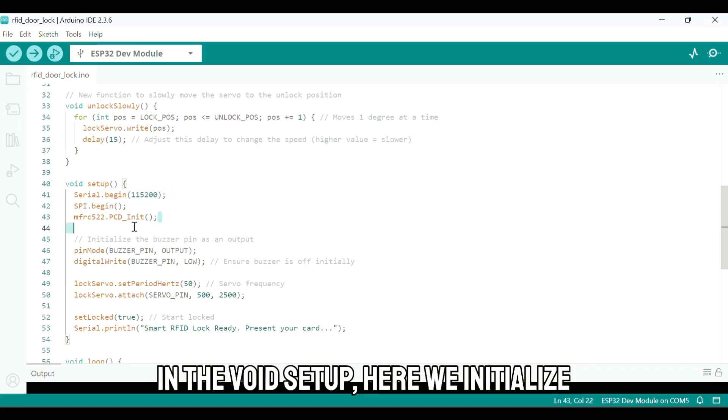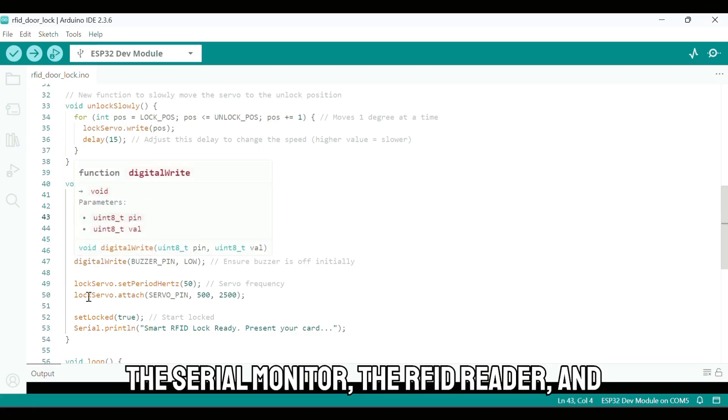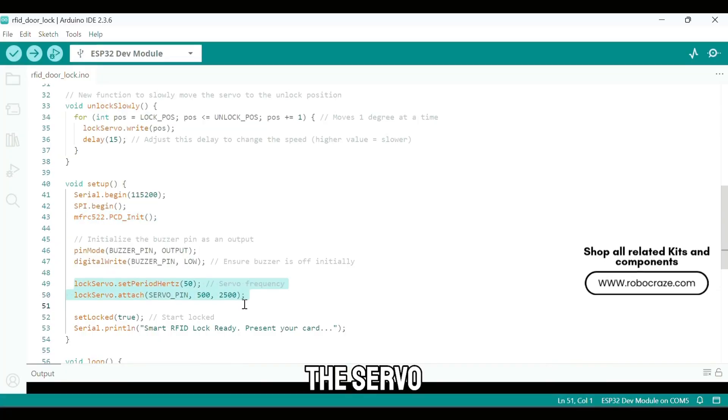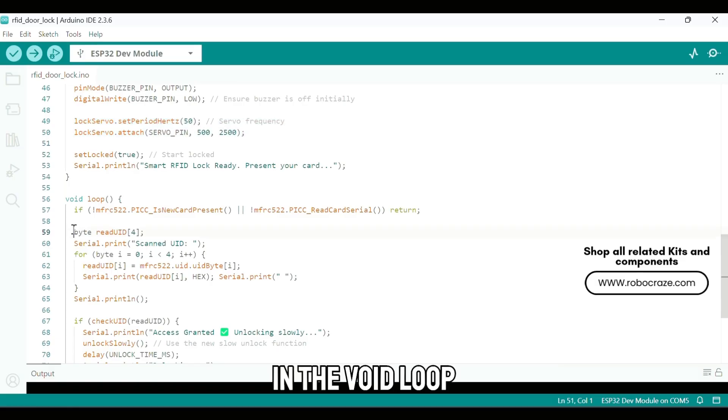In the void setup, here we initialize everything. The serial monitor, the RFID reader and the servo setting it to the locked position.